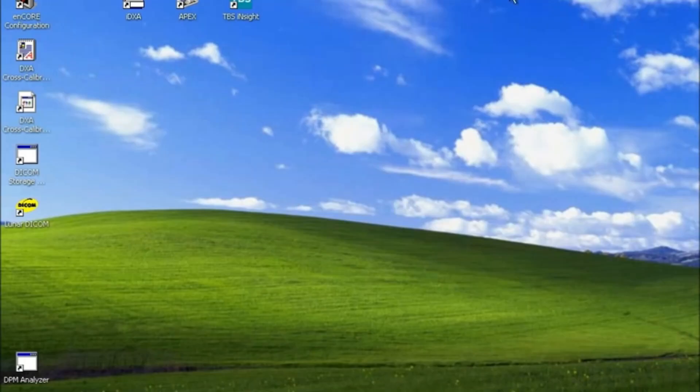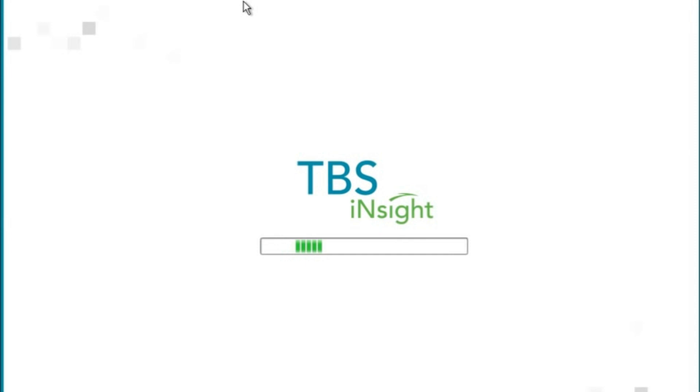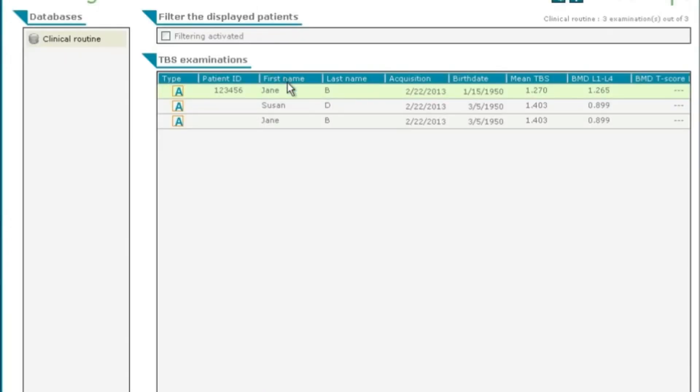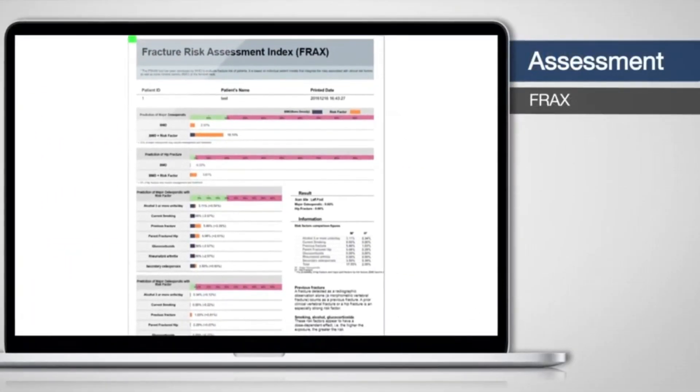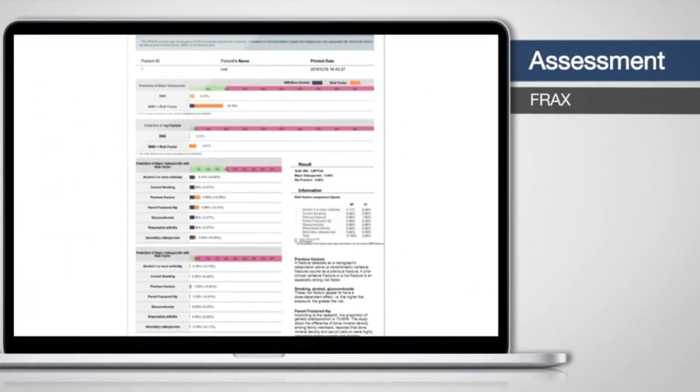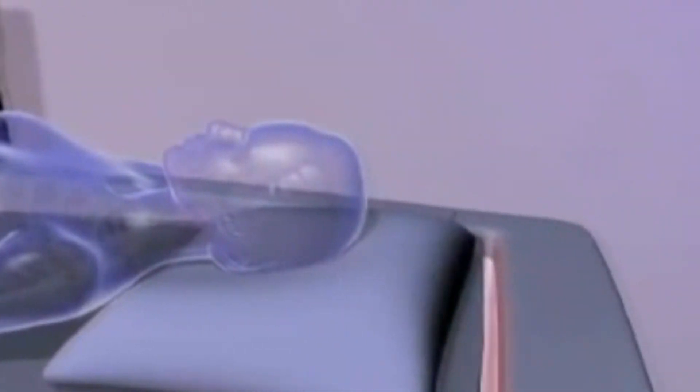Software within the X-ray system analyzes the image and compares it to a predetermined acceptance standard. On the basis of this comparison, the system either accepts or rejects the image and the product pack it represents. And in the case of rejection, software sends a signal to an automatic reject system, which then removes product from the production line. This was a simplified video on DEXA scanners.